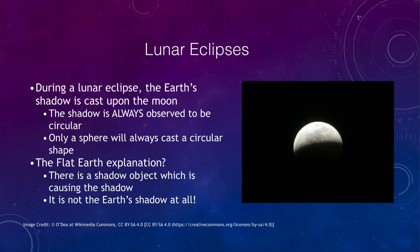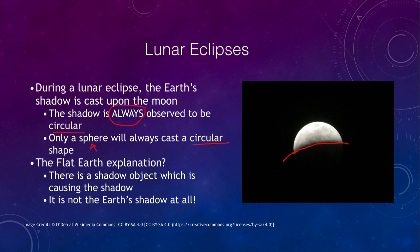Let's look at another argument: lunar eclipses. One argument from the ancient Greeks was that during a lunar eclipse, the Earth's shadow cast upon the moon is always observed to be circular. A disk could cast a circular shadow only in certain orientations — other times it would be elliptical or other shapes. The only object that will always cast a circular shadow is a sphere. So the Greeks knew the Earth had to be spherical simply because every lunar eclipse the shadow was always circular.